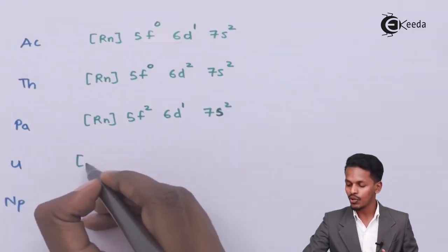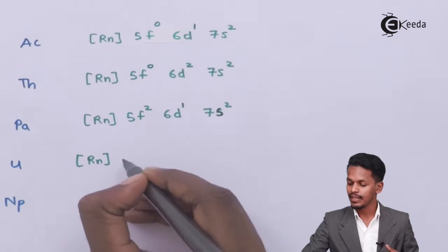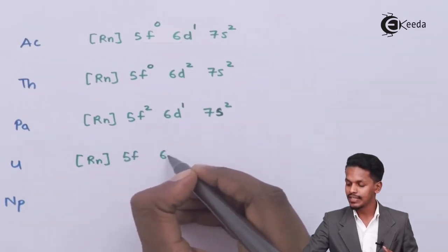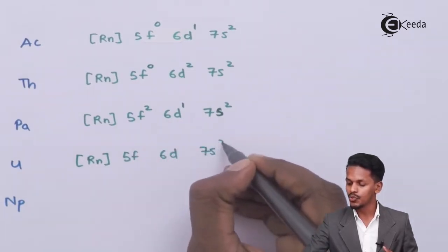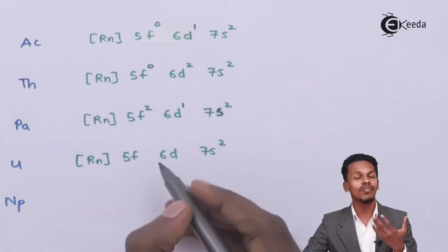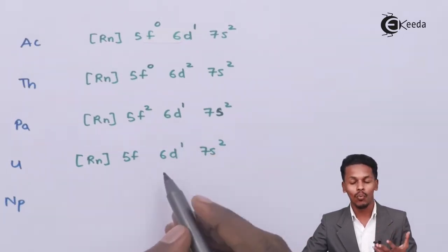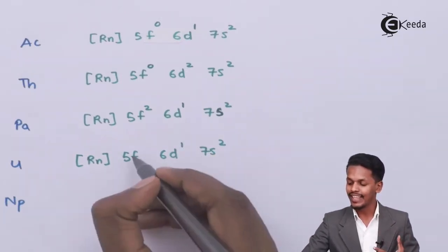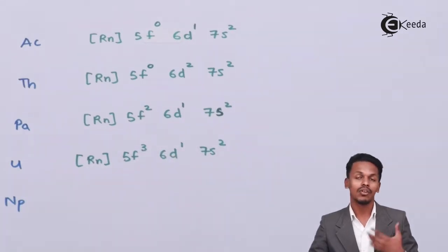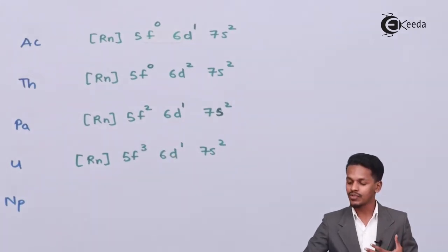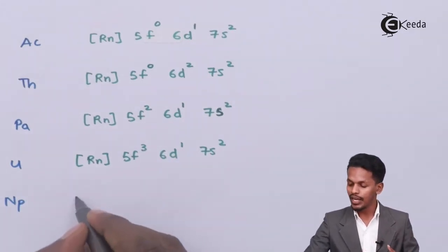For uranium, the electronic configuration is [Rn] 5f³ 6d¹ 7s². The d orbital consists of one electron and the f orbital consists of three electrons.